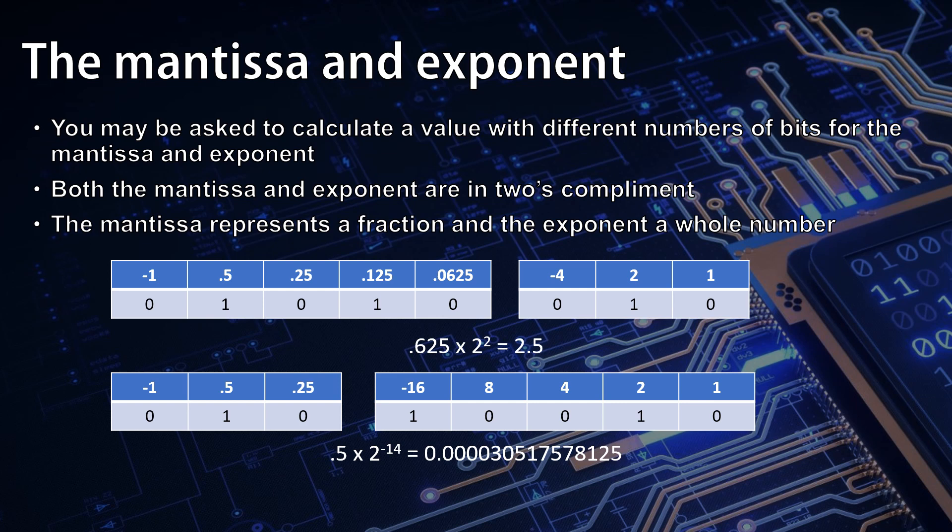However if we were using three bits for the mantissa and five bits for the exponent, this would now represent 0.00003051757812, which is very different in scale indeed.